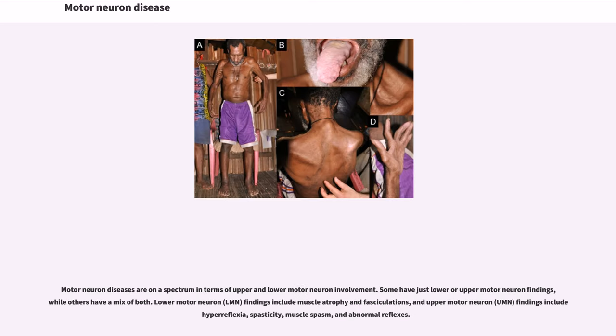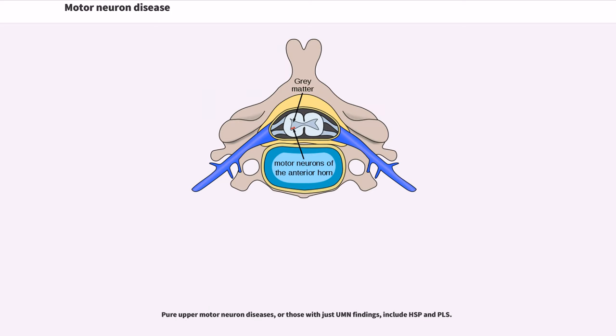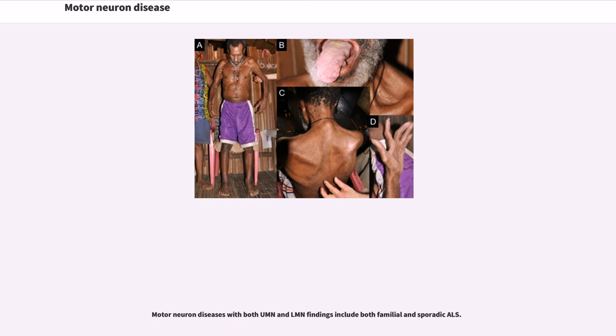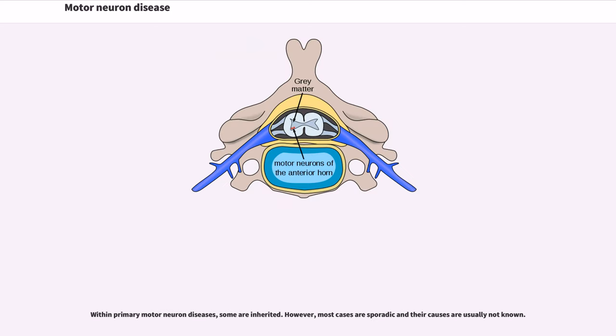According to Statland et al., there are three main weakness patterns that are seen in motor neuron diseases. Motor neuron diseases are on a spectrum in terms of upper and lower motor neuron involvement. Some have just lower or upper motor neuron findings, while others have a mix of both. Lower motor neuron, LMN, findings include muscle atrophy and fasciculations, and upper motor neuron, UMN, findings include hyperreflexia, spasticity, muscle spasm, and abnormal reflexes.